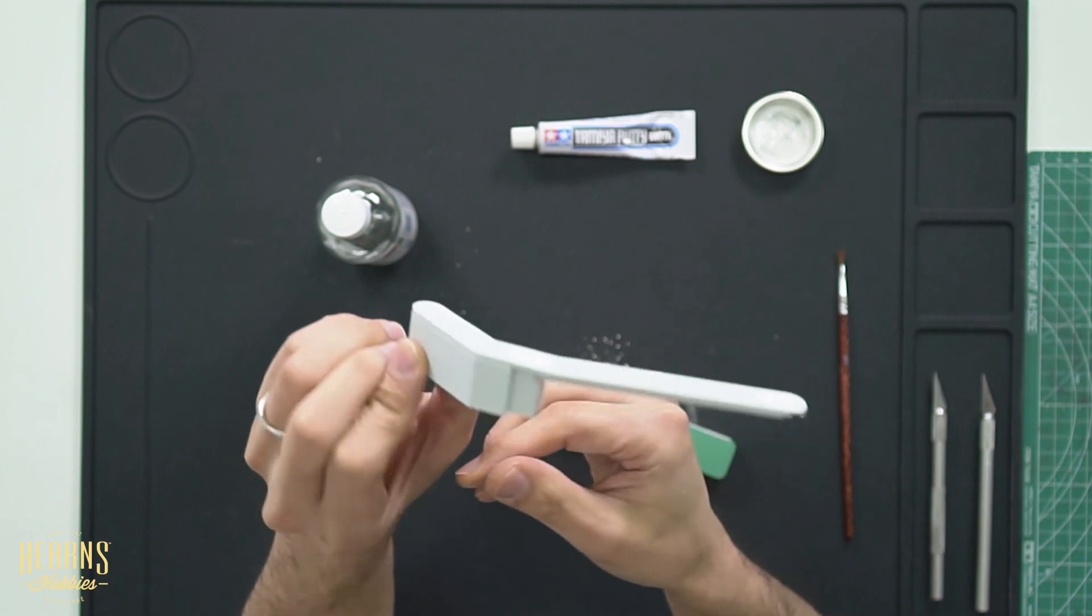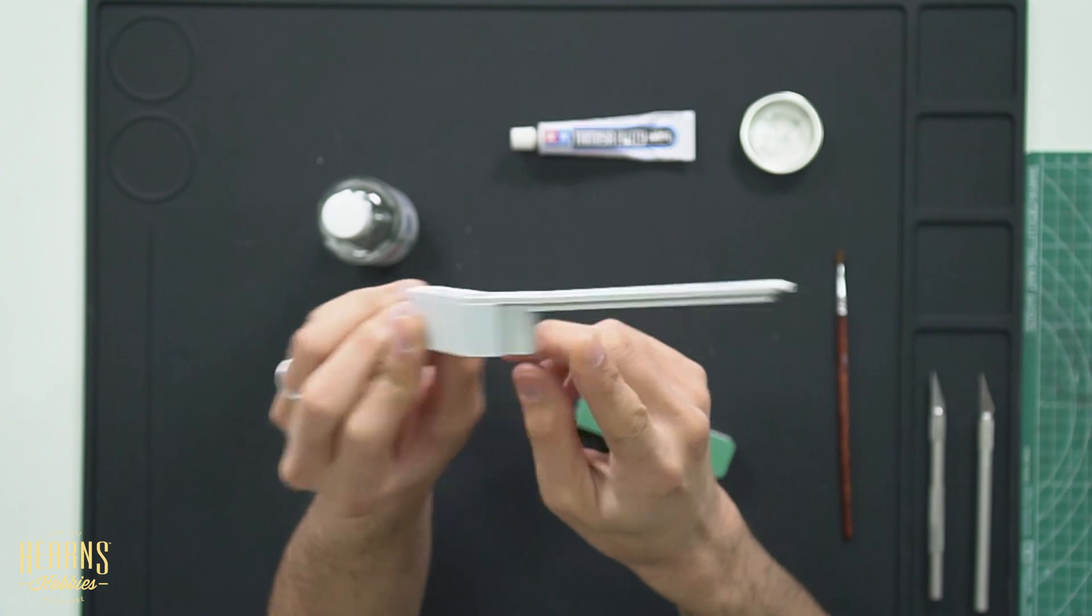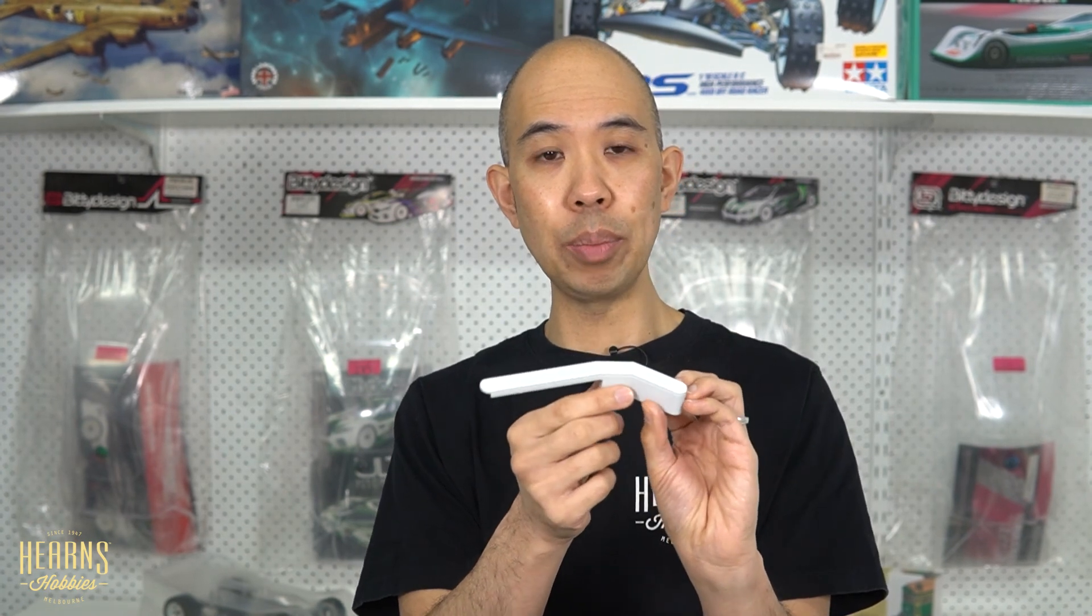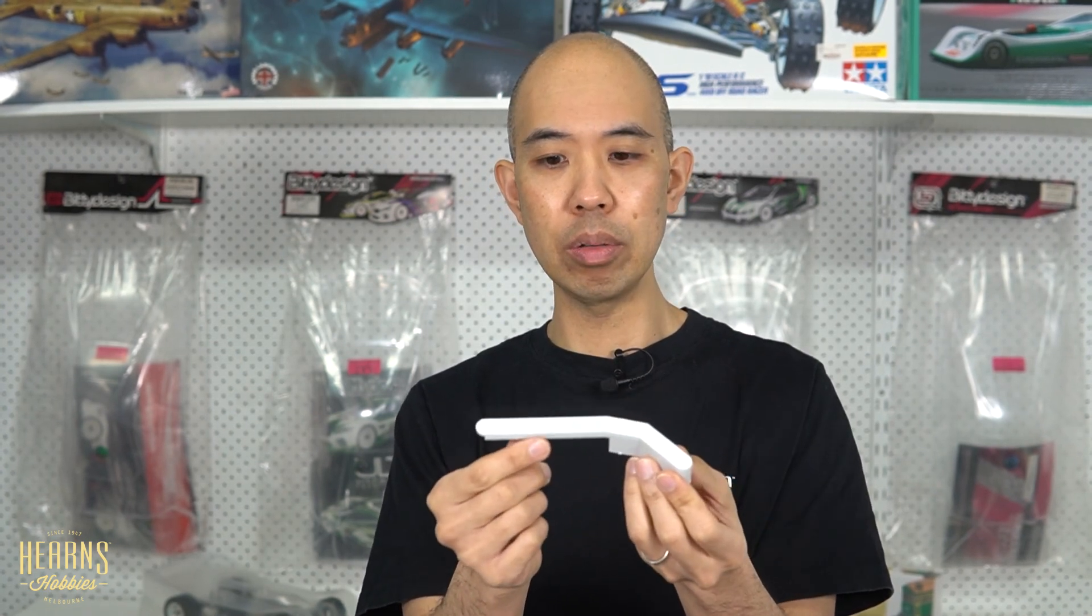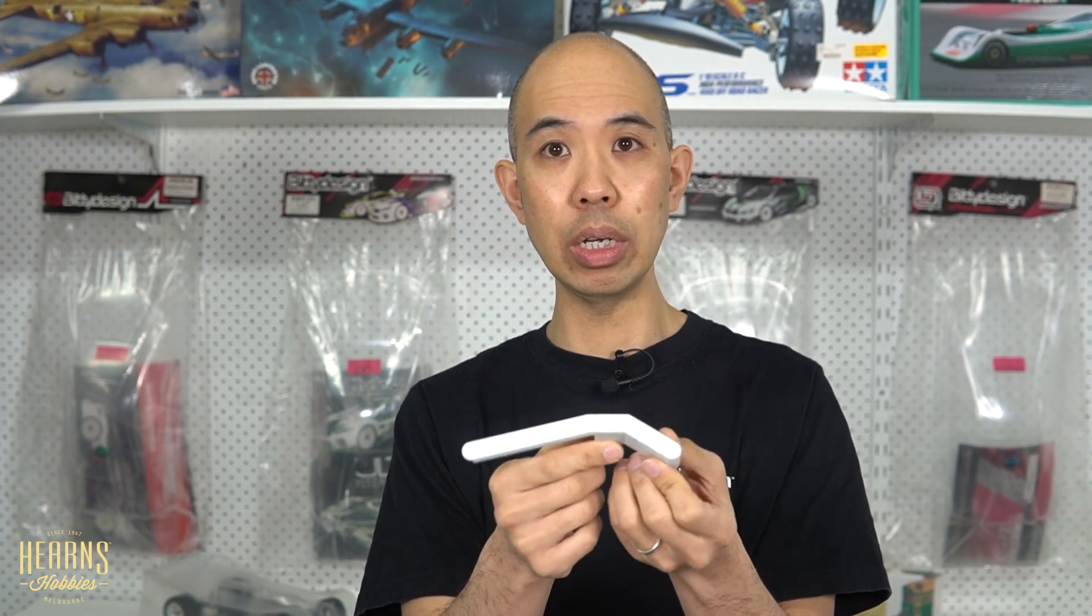But this will work with any of the lacquer-based thinners, either by Tamiya or from any of the other brands. So there you go. So if you have any questions, please leave them down on the bottom and I'll get to them as soon as I can. If you have any ideas on other applications for the putty or how to use it, please let me know and because there's a good chance that I could have forgotten some of these, I'll look at doing another video and addressing those. So thank you for watching.